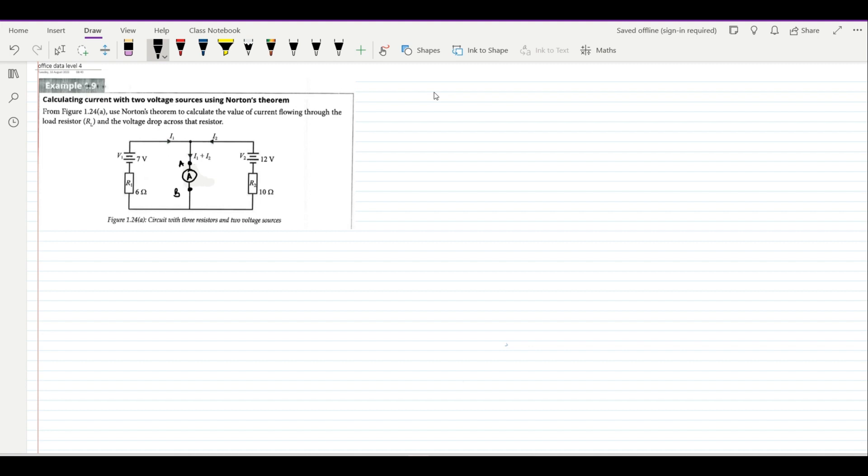Now we have to come back again to our Thevenin's theorem. When you do Thevenin's theorem, you need to short circuit one voltage source at a time so that we can start our calculation. What is the first thing that we do? We are going to short circuit V2.